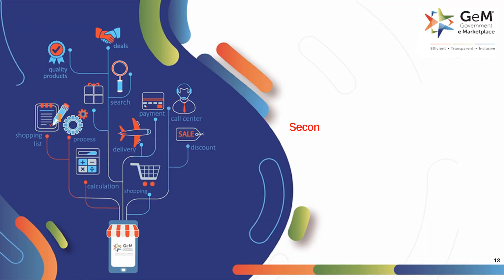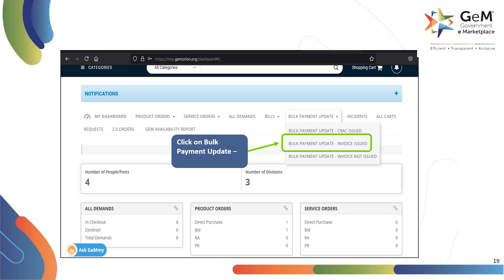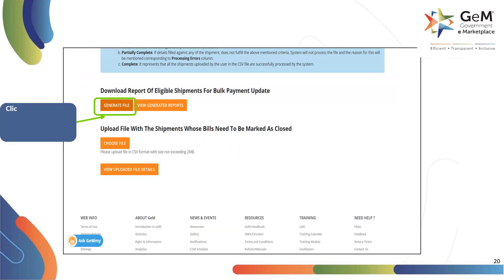Second scenario: for shipments where invoice is generated but PRC or CRAC may or may not be done. Click on bulk payment update invoice issued to fetch the payment due with invoice issued. Click on generate file to generate the pending payment report.